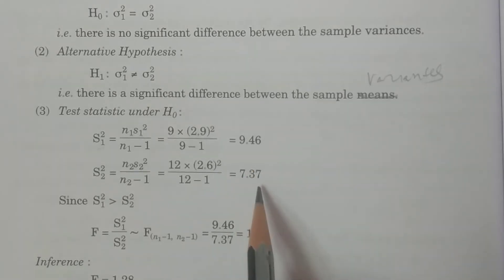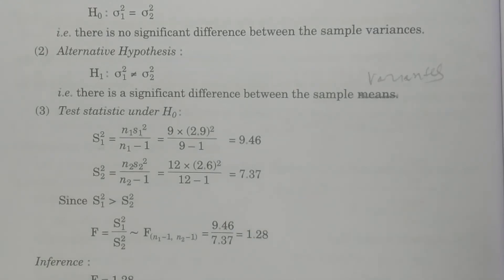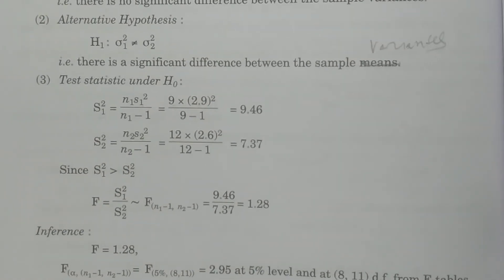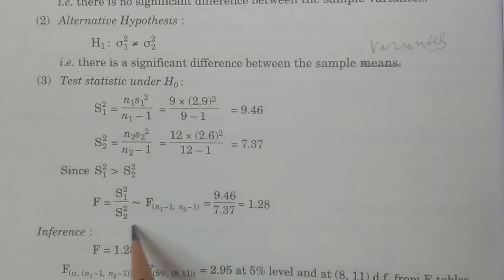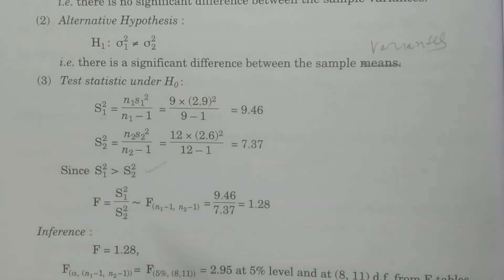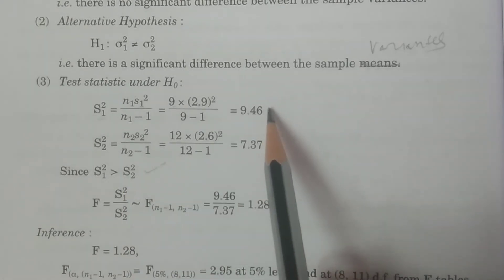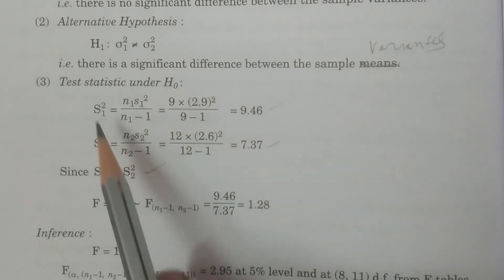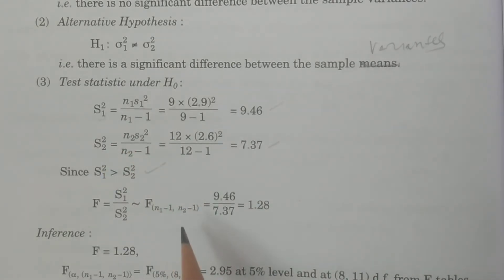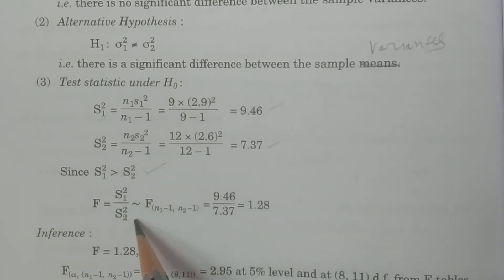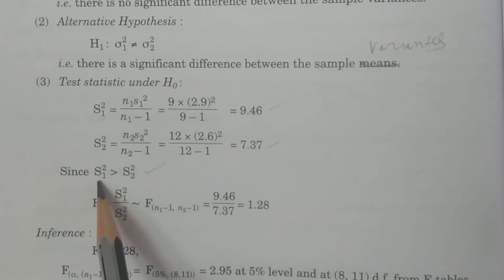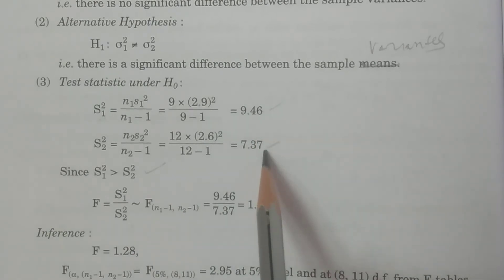Why are we calculating these two values first? Because in the F statistic we have S1² divided by S2² as the ratio. If S1² is greater than S2², use F = S1²/S2². If S2² is greater than S1², use F = S2²/S1². Here, since S1² = 9.46 is greater than S2² = 7.37, we use the formula F = S1²/S2².